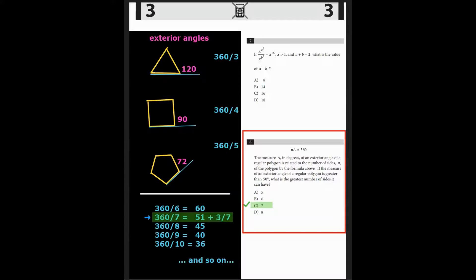When we get up to eight sides, the octagon, it looks like the measure of the exterior angle is now less than 50 degrees. So we need to stop. In other words, the seven sided figure, the septagon, has an exterior angle of 51 and three sevenths degrees or approximately 51.42 degrees. The correct answer is C. The seven sided shape is the most number of sides, which keeps the exterior angle above 50 degrees.